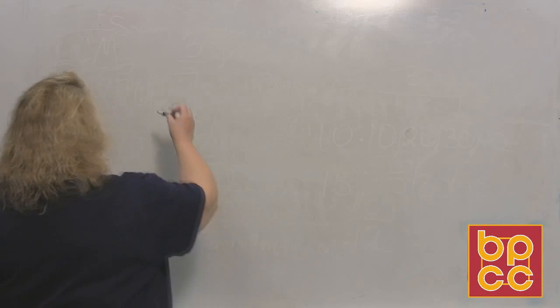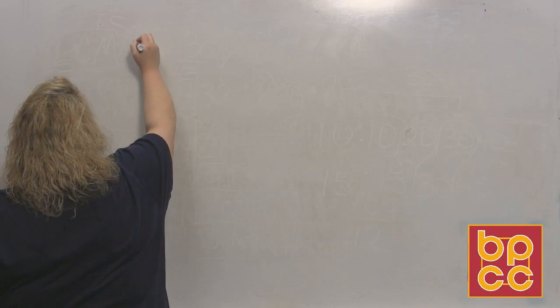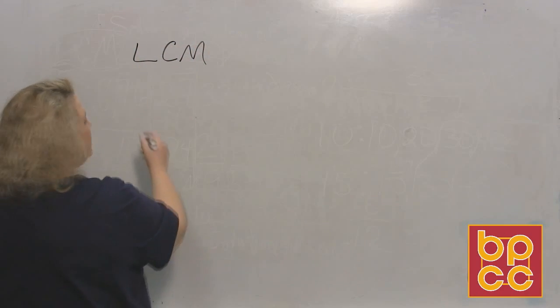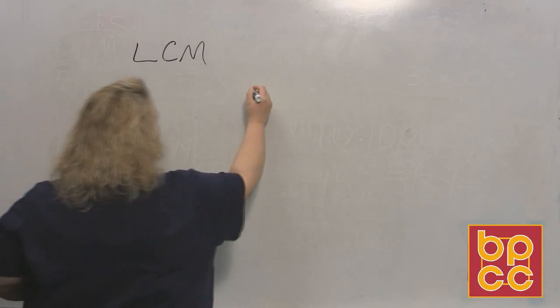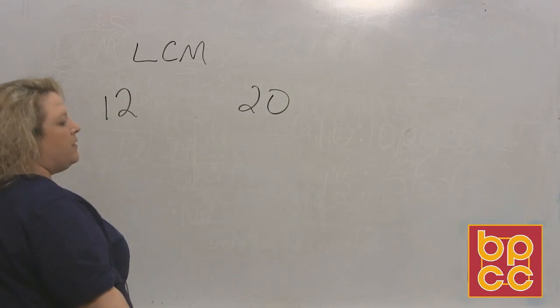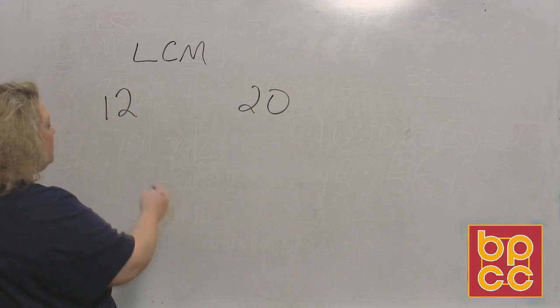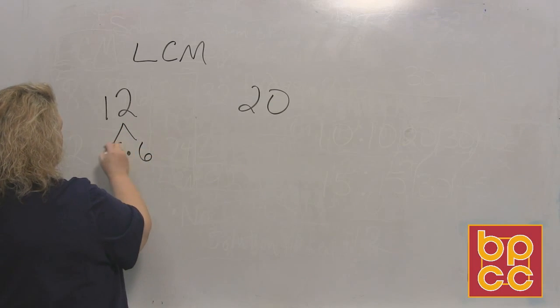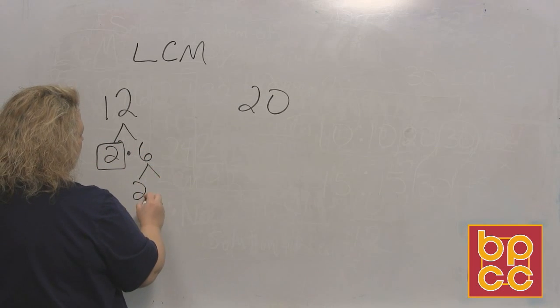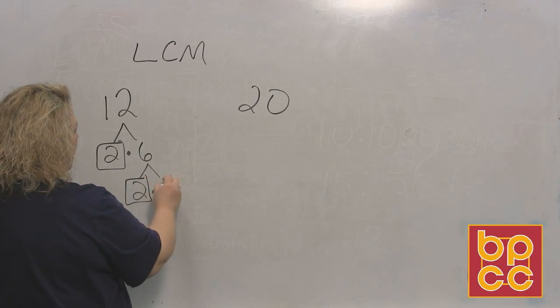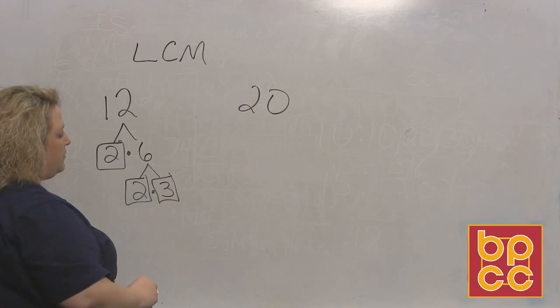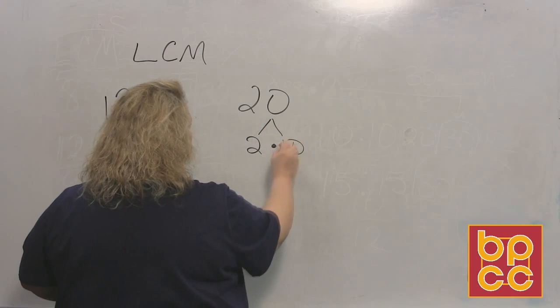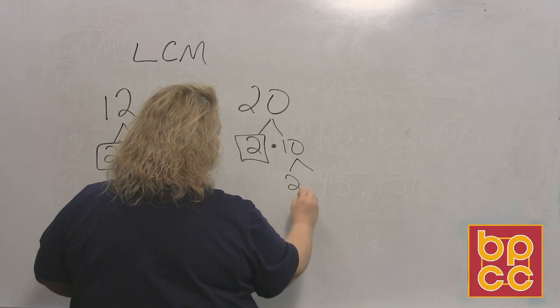When we do that, let's use 12 and 20. When I list the prime factorization for 12, those are the factor trees we've done. This is 2 times 6. That's a prime number. 6 is 2 times 3. These are both prime numbers. So that's the prime factorization for 12. For 20, that would be 2 times 10, and 10 would be 2 times 5.